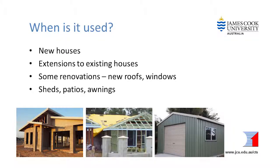If the wind classification is incorrect, your house may be at risk of damage from high winds. Wind classifications are used in all parts of Australia and are necessary when designing new houses. They may also be required if you plan to extend or renovate your house. Other structures on your site such as sheds, awnings or pergolas also need a wind classification to make sure they can resist the winds anticipated on your site.